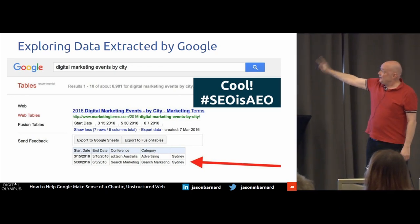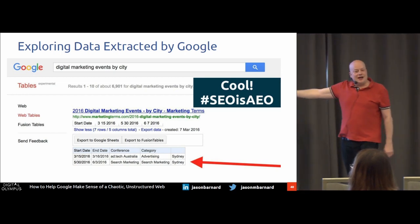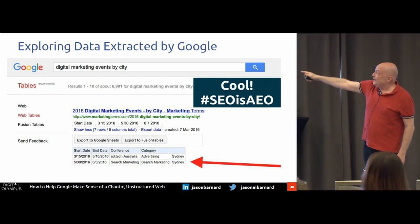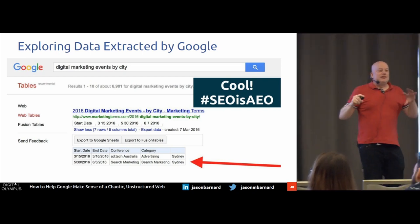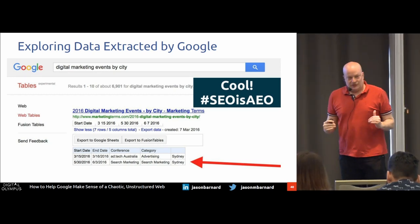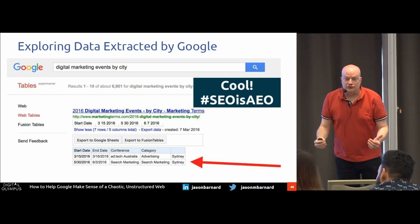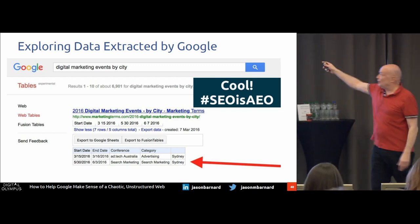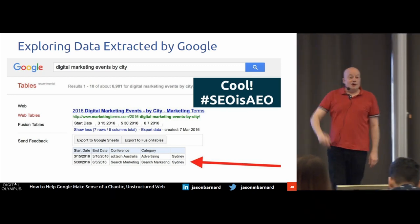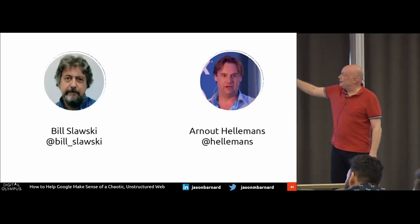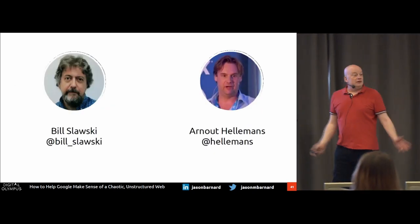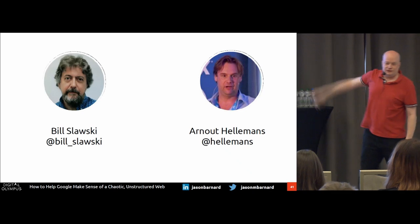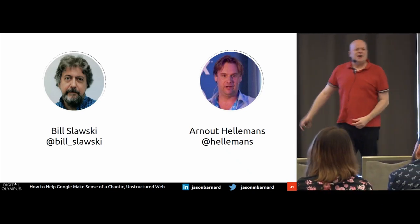There's an experimental table search engine exploring data accepted by Google — you can type in a term and it will pull out the tabular data it has for that term. As a site owner, you can check that Google has digested, understood, and is confident it has understood what you have in your tables. And of course your design-based tables will not appear there. Two people to follow for this: Arnuch, who's a big fan of that search engine, and Bill Slawski — super smart, knows about all this stuff.